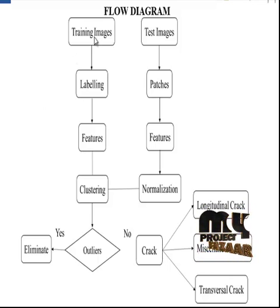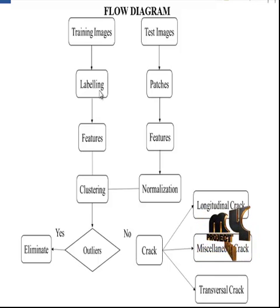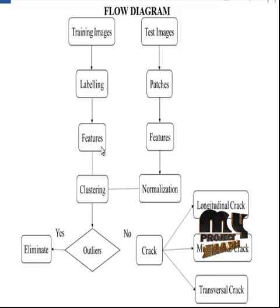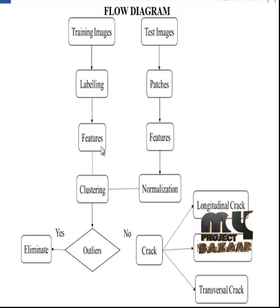First, the training images were labeled based on feature extraction. The training images were selected and the labeling of the cracks was employed. Features were extracted from the regions. Labeling refers to the identification of crack and non-crack pixels in different representations. The features were obtained and saved.